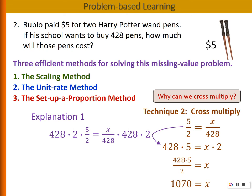Then you will see that the 2 and 2 cancel, the 428 and 428 cancel. So now all that's left on the left side is 428 times 5, and on the right side is just x times 2. So one way of explaining is to think of a way to get rid of the denominators of each fraction.